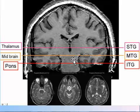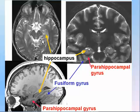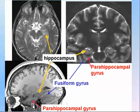The superior temporal gyrus is opposite the thalamus, the middle temporal gyrus is opposite the midbrain, and the inferior temporal gyrus is opposite the pons. At the hippocampal region, the most medial structure is the amygdala, with the hippocampus lateral to it. There is also a parahippocampal gyrus running medially and extending posteriorly.